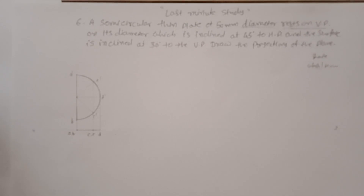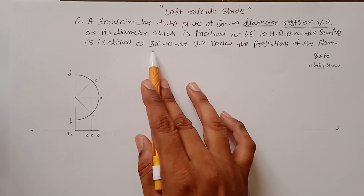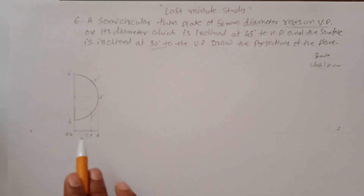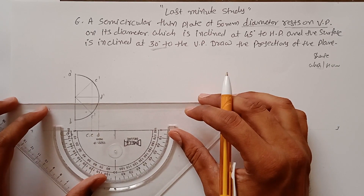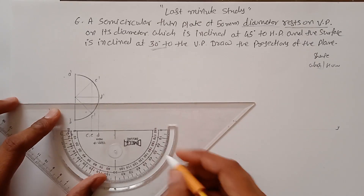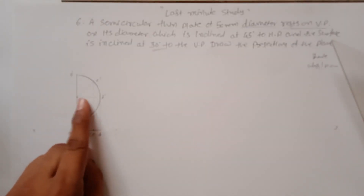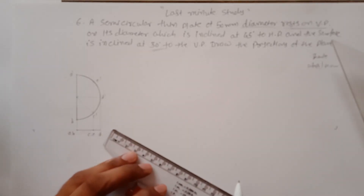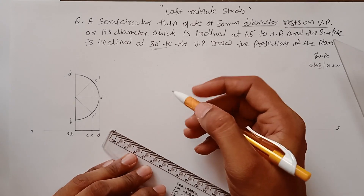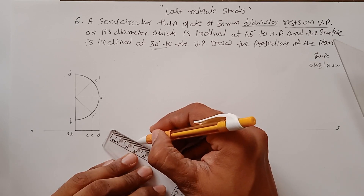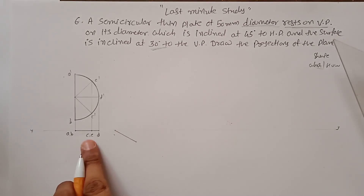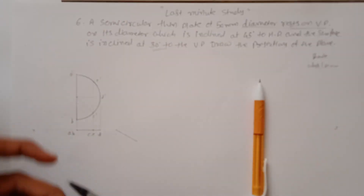For the second position, the inclination with the VP is 30 degrees. Construct a line at 30 degrees at any suitable distance. This distance is 25 mm because it is the radius of the circle, so draw a 25 mm line from this point at 30 degrees.